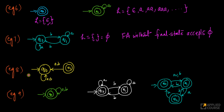Now let's look at this example. You have q0 as both the initial and final state. You have a final state here, but on input a or b, you continue to stay in q0 and will never reach q1. So q1 is an unreachable state, and your final state is unreachable. The language accepted here is null set because this can't even accept epsilon — using an empty string, you're stuck at q0 and q0 is not a final state here.